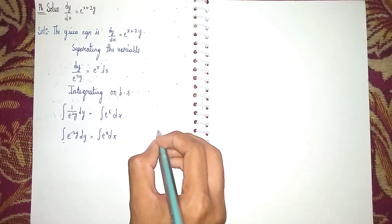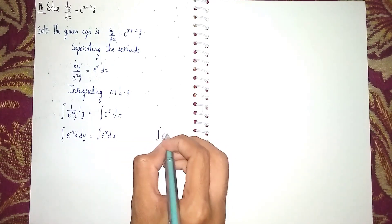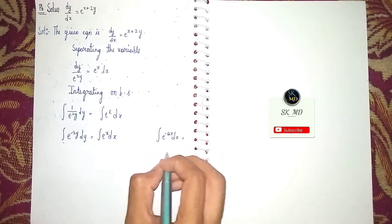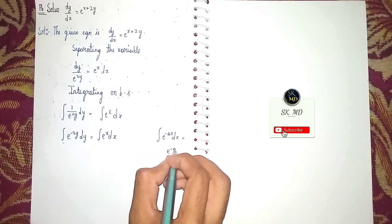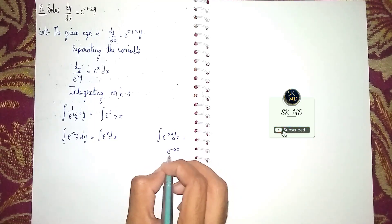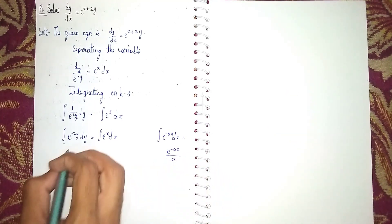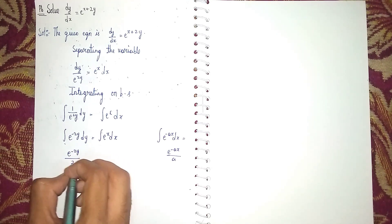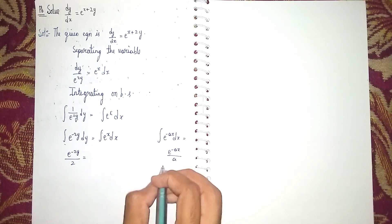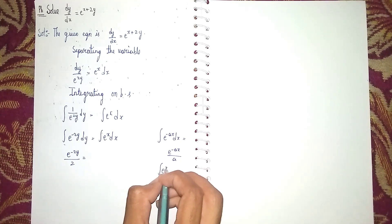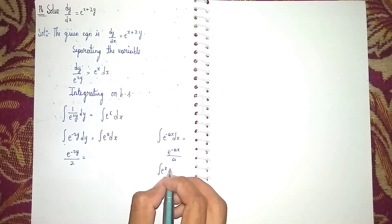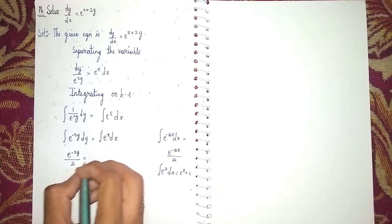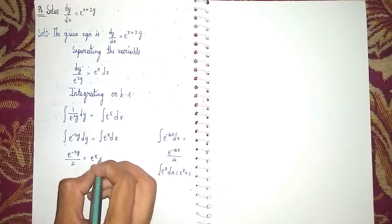The formula we are using is: integrate e^(-ax) dx = e^(-ax) / a. Applying this formula here: e^(-2y) / 2 = integrate e^x dx, and integrate e^x dx = e^x + c. So we have e^(-2y) / 2 = e^x + c.